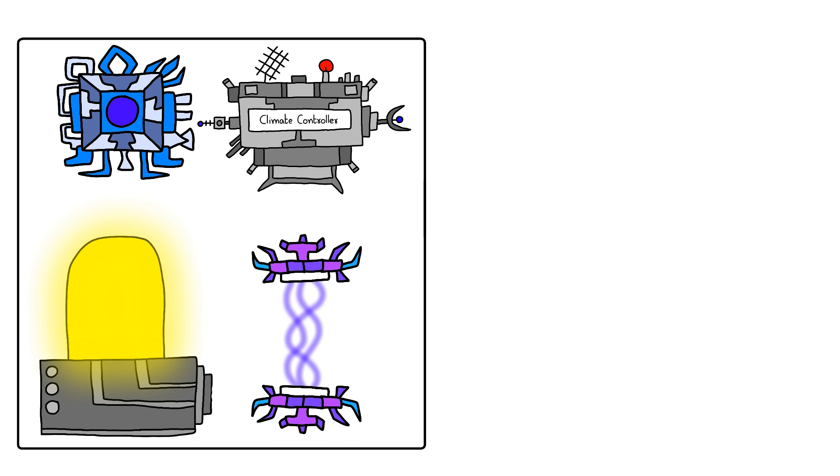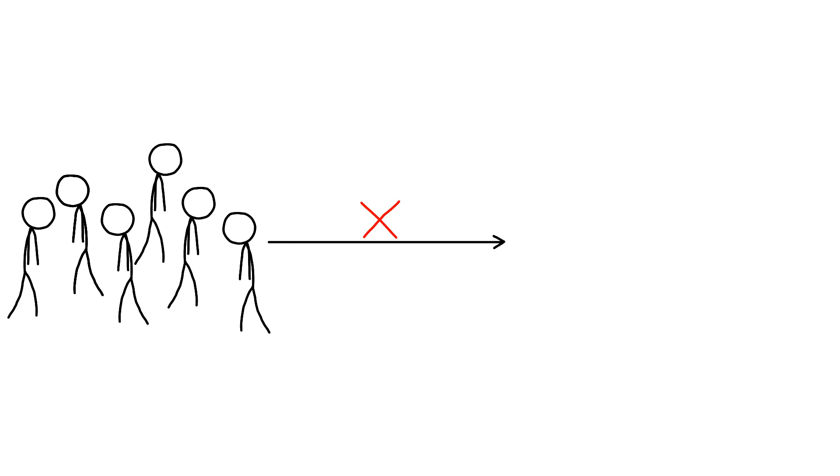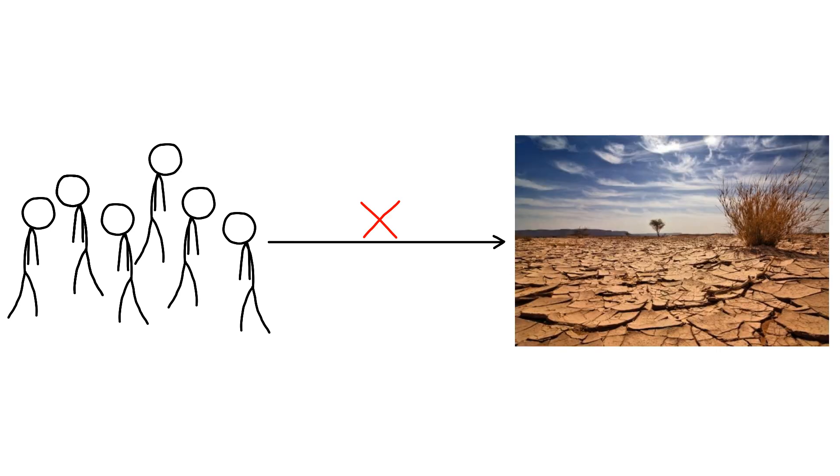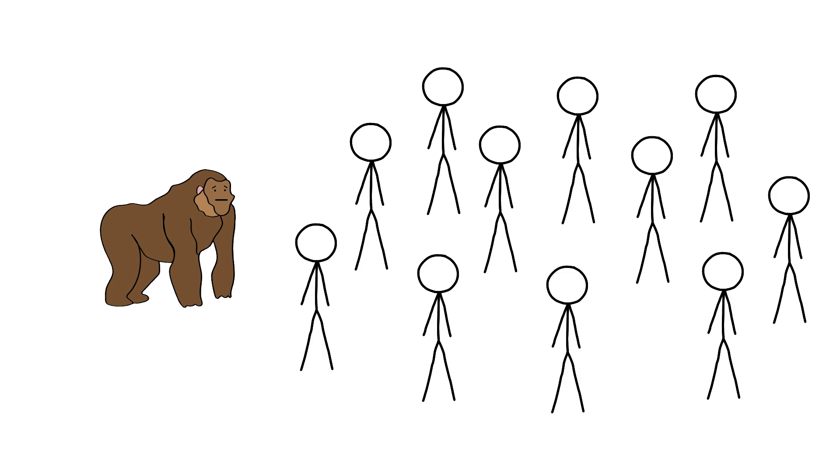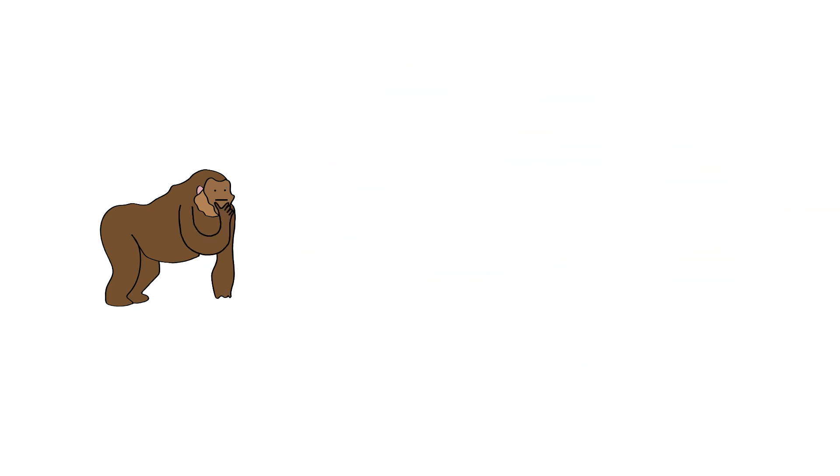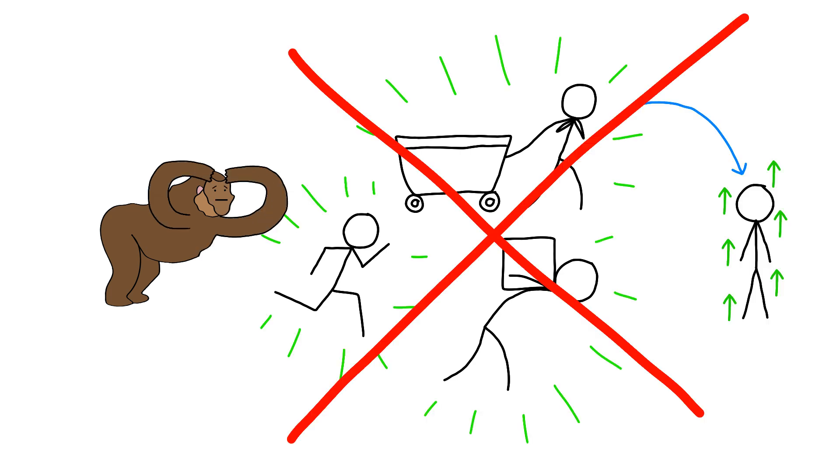But here's where it gets really scary. Monkey realizes that all this artificial perfection is making humans weak, because they no longer face natural disasters, or resource scarcity, or climate challenges. And Monkey's watching humanity become soft and dependent. And Monkey's thinking, maybe struggle and hardship were actually important for human development. And Monkey just removed all of that.